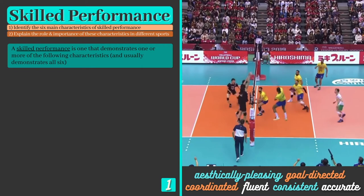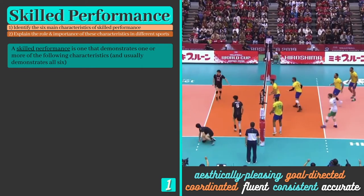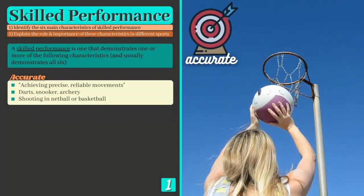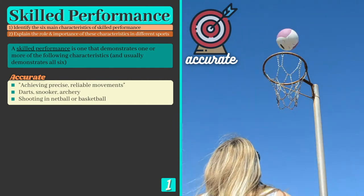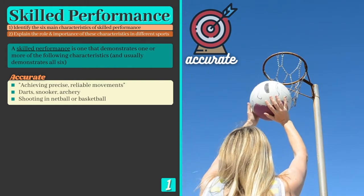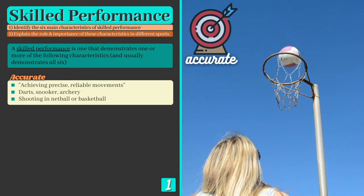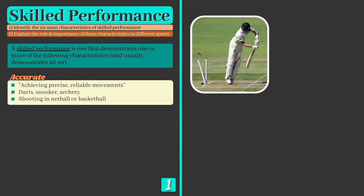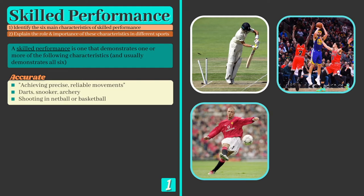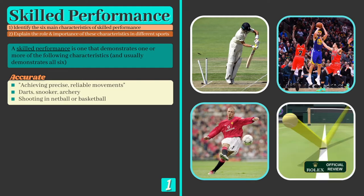The six characteristics are: accurate, consistent, fluent, coordinated, aesthetically pleasing, and goal-directed. Accurate means achieving precise, reliable movements, and is particularly important in games such as netball when passing to a marked player or shooting at goal. Accuracy is also essential for bowlers when aiming at the stumps, basketball players when shooting from distance, footballers when taking a direct free kick, and tennis players looking to hit winners by hitting lines.